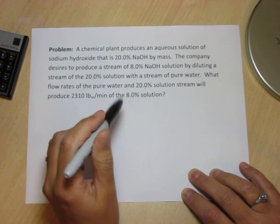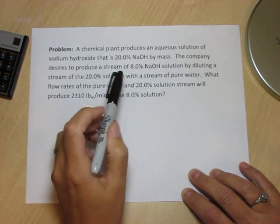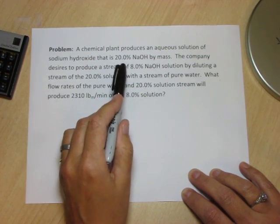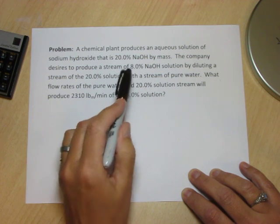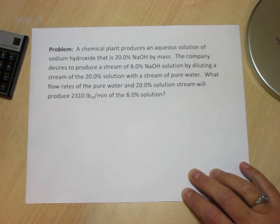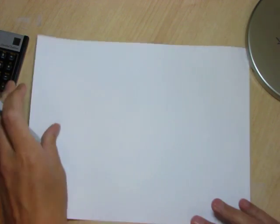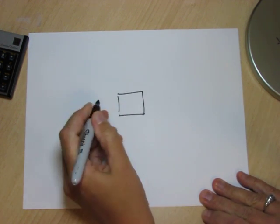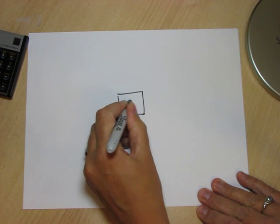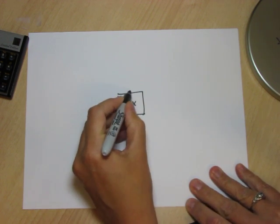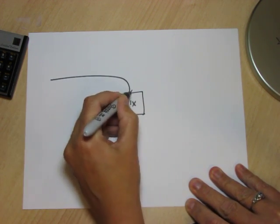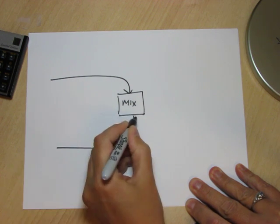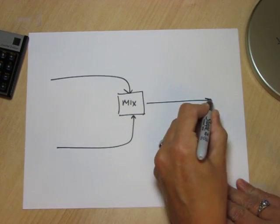Our first step then is to draw the mixing problem and to label our drawing with the facts that are present in the problem. We're going to mix two streams so I'm going to draw a mixer with the two streams and I'm going to give myself lots of space to label the problem.